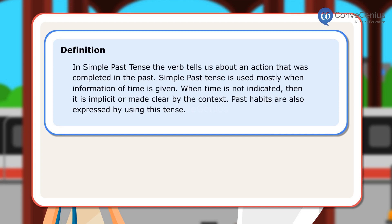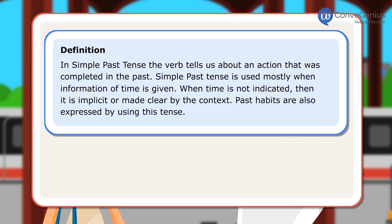Definition: In simple past tense, the verb tells us about an action that was completed in the past. Simple past tense is used mostly when information of time is given. When time is not indicated, then it is implicit or made clear by the context. Past habits are also expressed by using this tense.